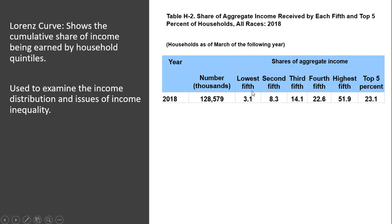We see that the bottom 20%, the lowest fifth, earned 3.1% of all income. The second fifth earned 8.3%. The third fifth, middle 20%, earned 14.1%.